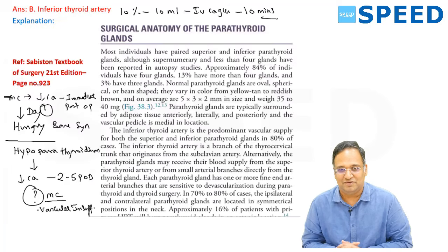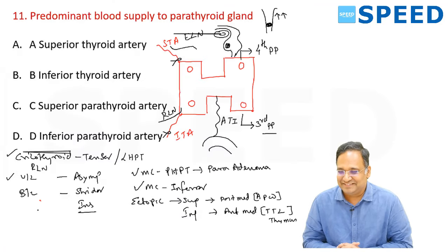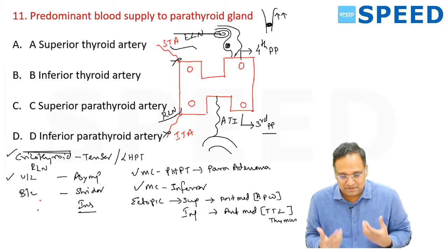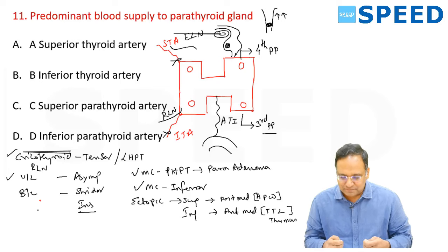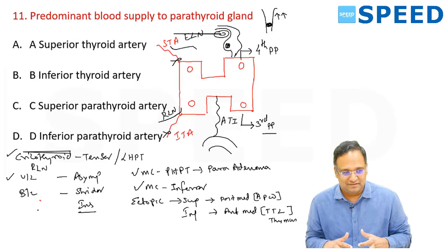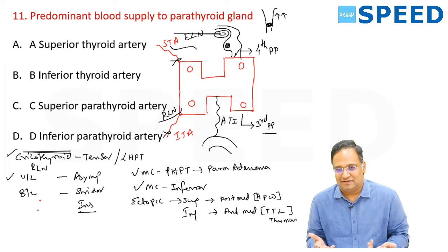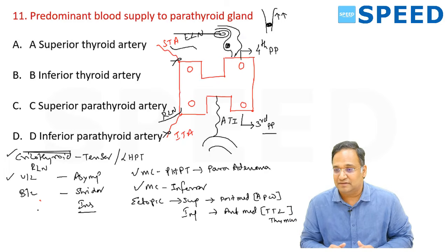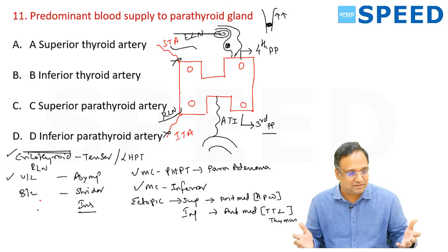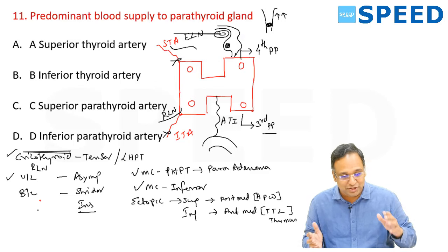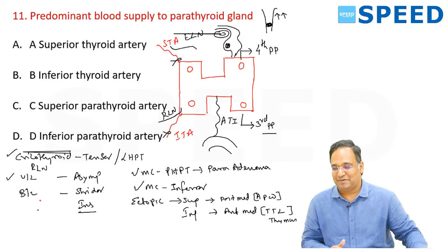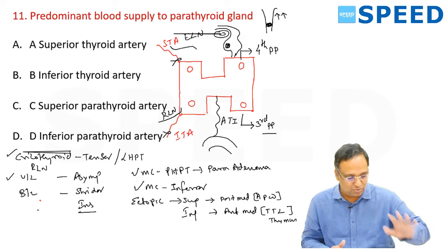We have done enough around this area. Go to a battlefield knowing the field. One question asked in an exam was about the weight of the parathyroid gland. From Bailey and Love, page 923: normal parathyroid glands are oval or bean-shaped, vary in color from yellow-tan to reddish-brown, average 5×3×2 mm in size, and weigh 35–40 mg. Inferior thyroid artery provides predominant vascular supply for both superior and inferior parathyroid glands in 80% of cases.